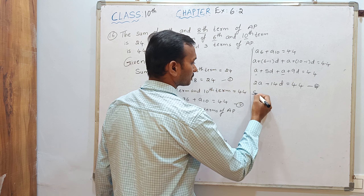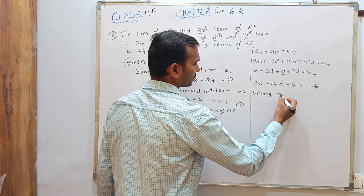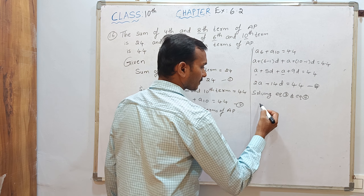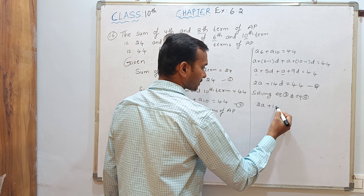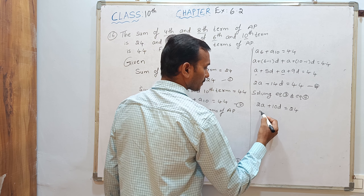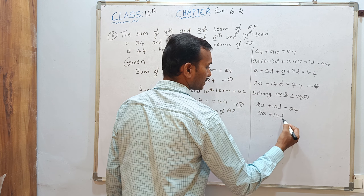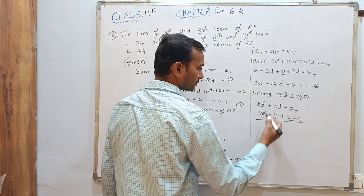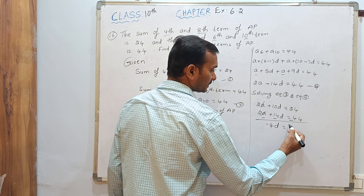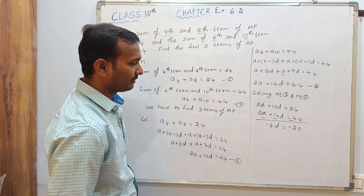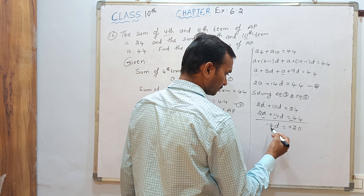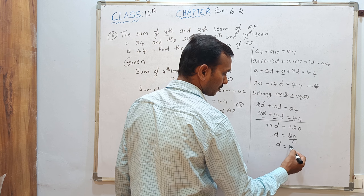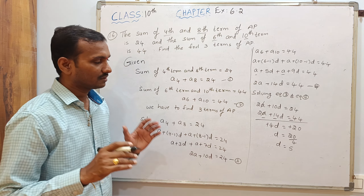Solving equations 3 and 4: 2A plus 10D equals 24, and 2A plus 14D equals 44. By subtraction, we get minus 4D equals minus 20, so the minus signs cancel and D equals 20 divided by 4, which gives D equals 5.